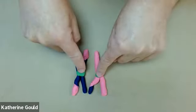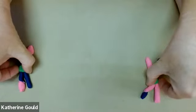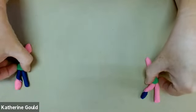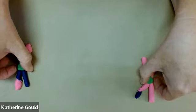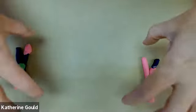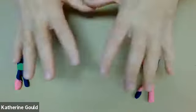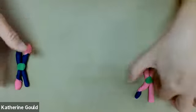Then in anaphase 1, the homologous pairs separate. So one of these is going to go into one daughter cell, the other is going to go in the other daughter cell. All the homologous pairs separate. And then in telophase 1, the nuclear envelope reforms. Let's assume this is an animal cell. We get a cleavage furrow. Cytokinesis happens.